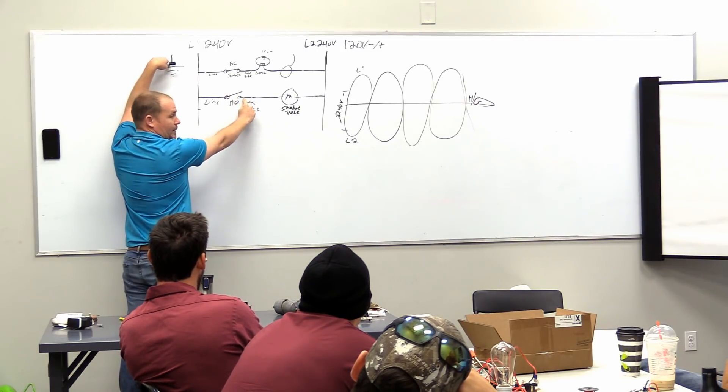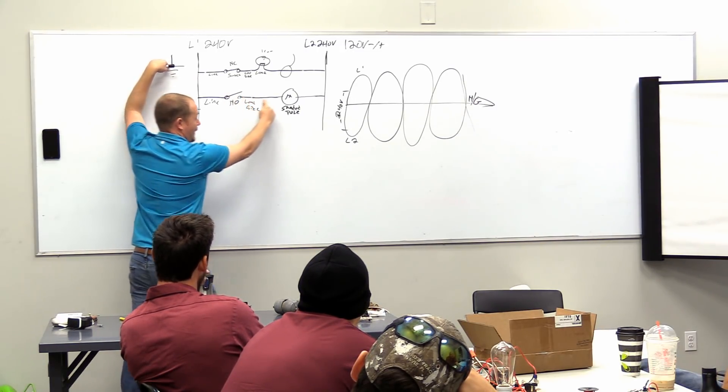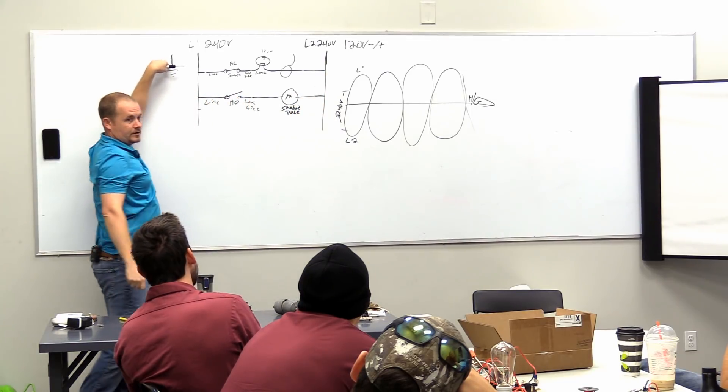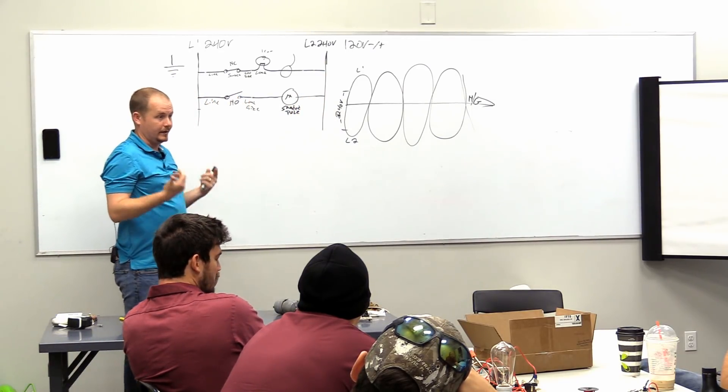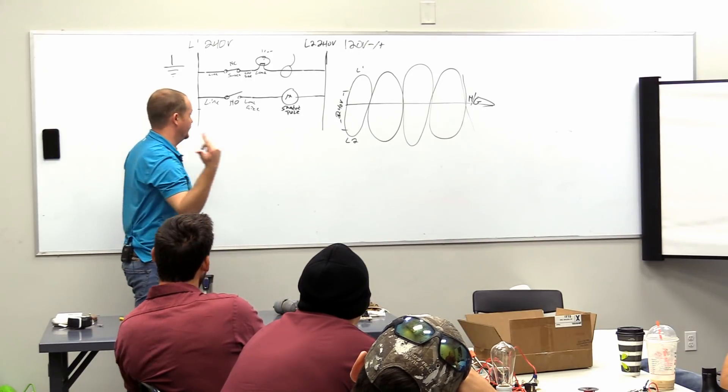Because the switch is open. Why am I reading 120? It's back feeding through L2, right. So I'm still reading 120 using ground. It really isn't telling me much. Now, let's do it this way.